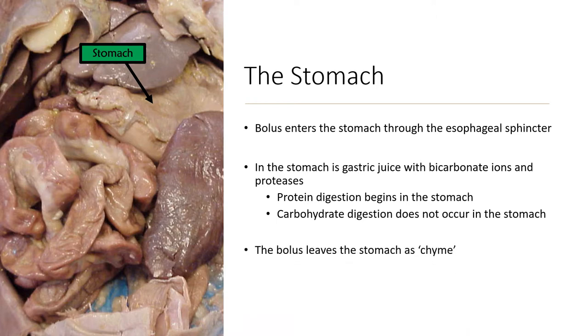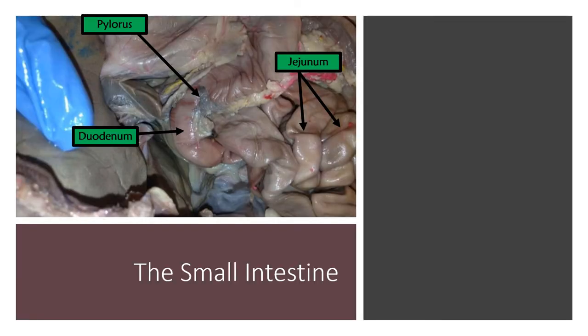The bolus then leaves the stomach as chyme, and we've now entered the small intestine whose main function is absorption. The chyme passes into the small intestine via the pylorus, which is the muscle that expands and contracts to allow the passage of food into the small intestine.